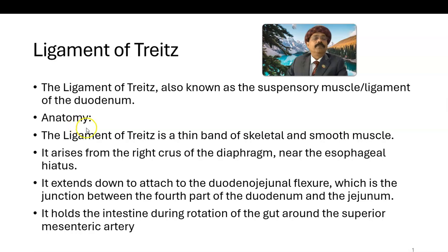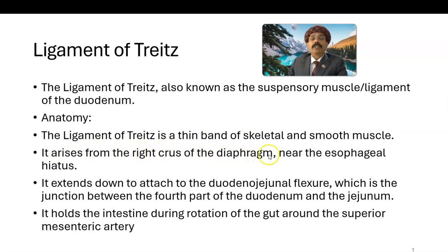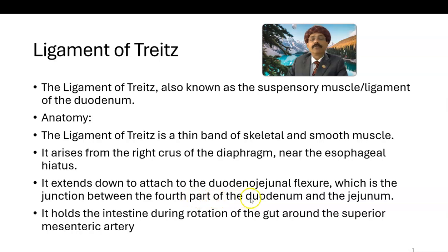Anatomy of the ligament of Treitz. The ligament of Treitz is a thin band of skeletal and smooth muscle with fibroelastic tissue in between them. It arises from the right crus of the diaphragm near the esophageal hiatus. It extends down to attach to the duodenojejunal flexure, which is the junction between the fourth part of the duodenum and the jejunum.